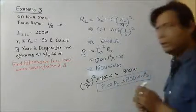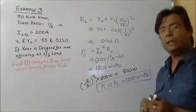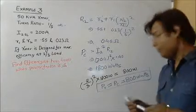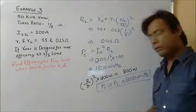So Pi will be equals to Pc, which is equals to 800 watts. This is a very important thing: Pi equals Pc at full efficiency, will be equals to 800 watts.